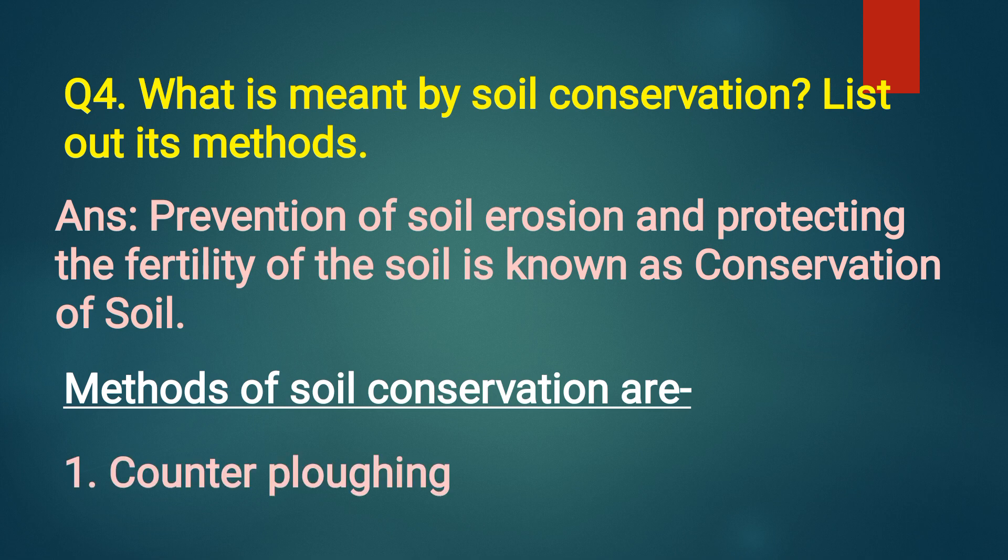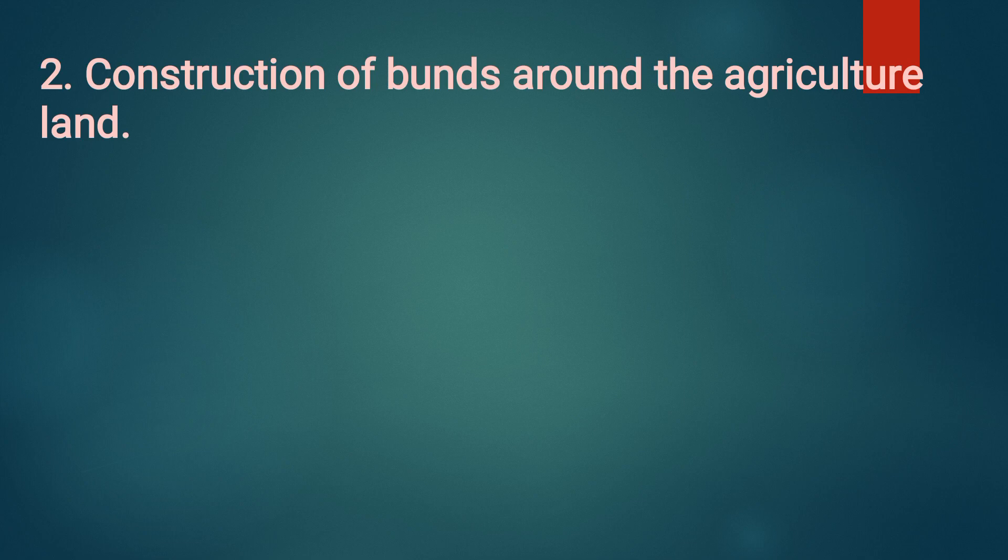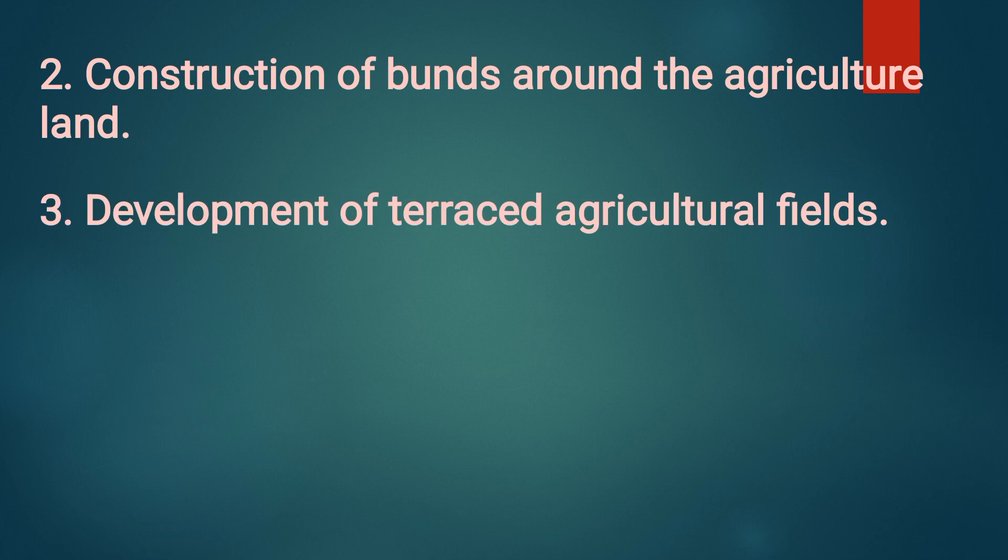Methods of soil conservation are, first one, counter plowing. Second one, construction of bonds around the agriculture land. Third one, development of terrestrial agricultural fields.